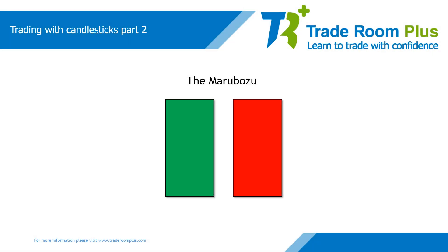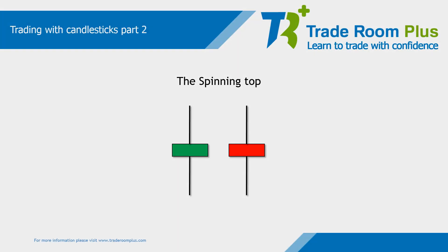The Marubozu is a candle which is often a good indication of momentum and directionality in the market. The close of the candle is the key aspect to a Marubozu — that is because the close is right at the top or bottom of the candle's range, depending on whether the candle is bullish or bearish. It indicates that either the buyers or sellers are controlling the price action and direction of the market. You will often find these in trending markets.